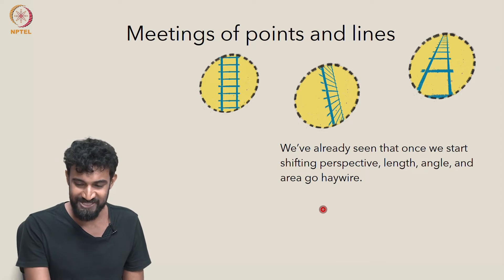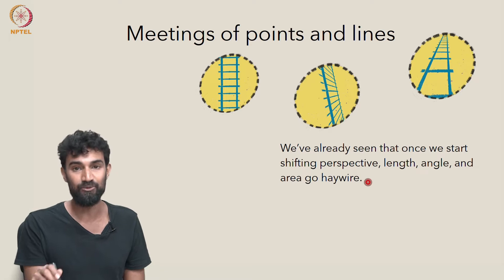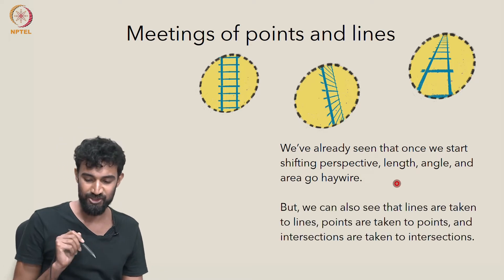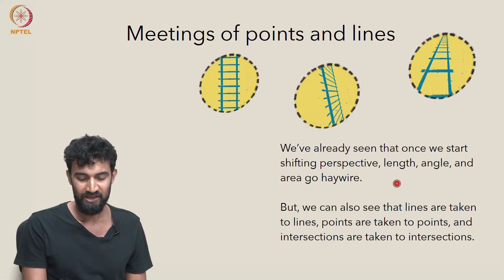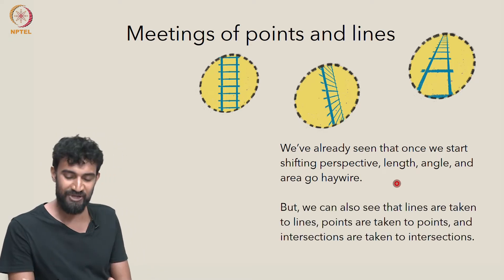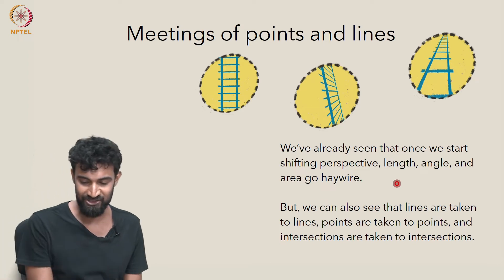But we've already seen that when we start shifting perspective, all of these — like length, angle, area, and all the rest — go haywire. So somehow our geometry has to be based on something more fundamental.